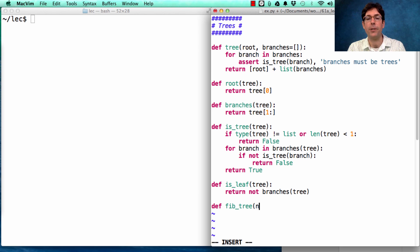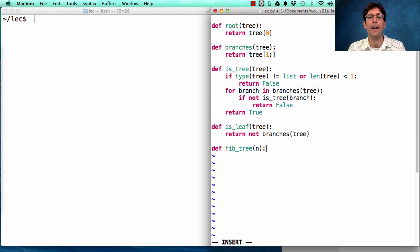So, let's create Fibonacci trees, where the root value will be the nth Fibonacci number. So, if n is 0 or n is 1, then we just have a leaf. We return a tree containing n as the root value. Otherwise, we need to create the left branch and the right branch of the Fibonacci tree. Those involve recursive calls to Fib tree n minus 2 and Fib tree n minus 1.